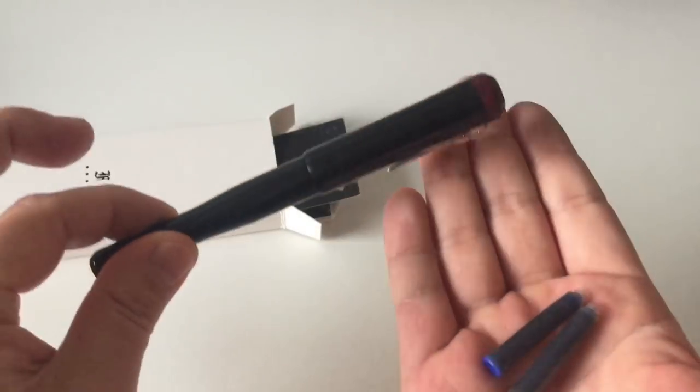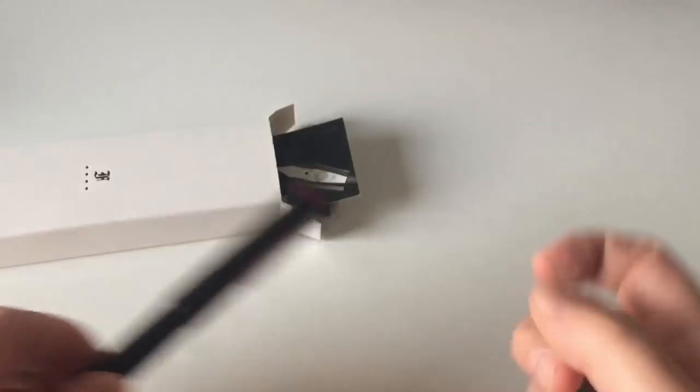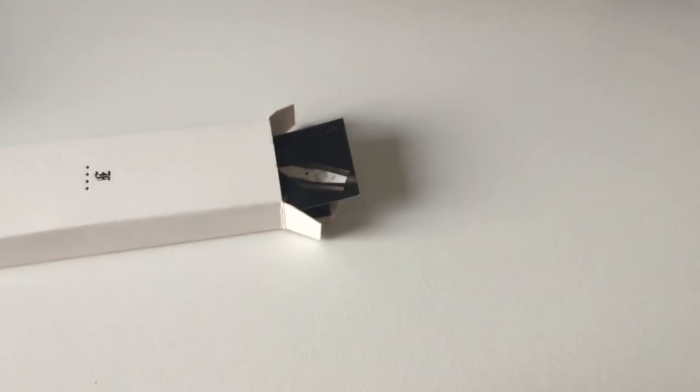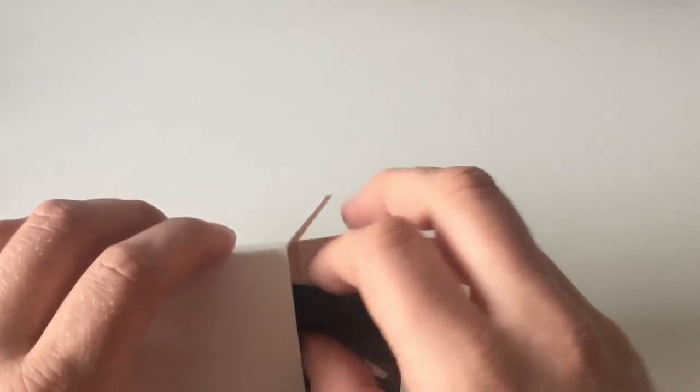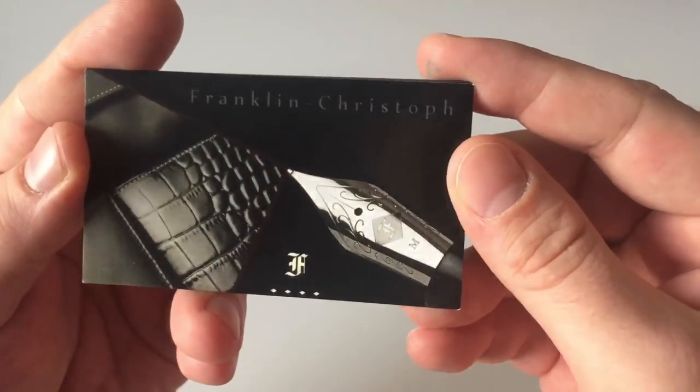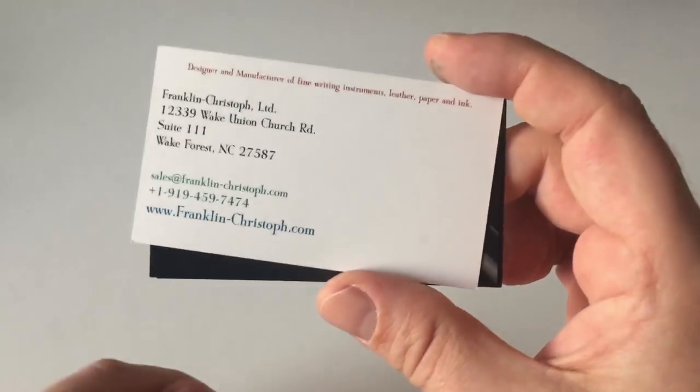You then get a blue and a black ink cartridge because the pen does take standard international cartridges, but it also does come with a converter and you can also eyedropper fill the pen. I'll get back to that in a minute. So it's nice you get two ink cartridges which gets you started straight away, and then you get a couple of cards here. First of all, a Franklin Christoph business card with the Franklin Christoph nib design with their address and website where you can order the pen from.